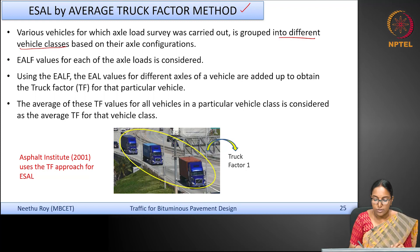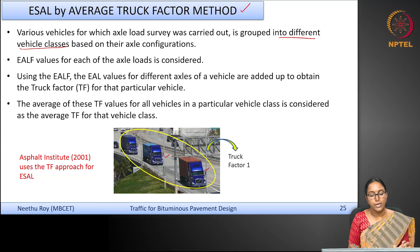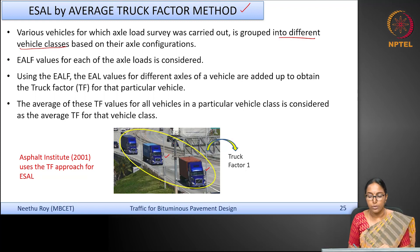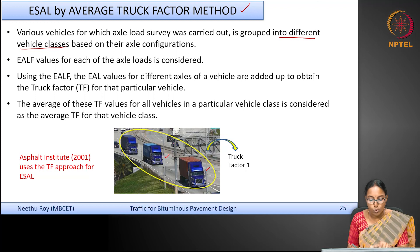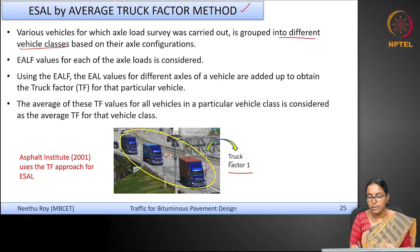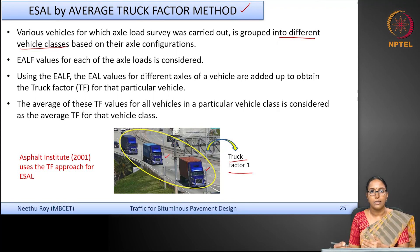You have a truck factor for this vehicle, a truck factor for that vehicle, and so on. You can then average out the truck factor for all the vehicles in that particular vehicle class to get an average truck factor for that vehicle class. If all blue trucks belong to one vehicle class, you get a truck factor for that class. Similarly, another vehicle class will have a separate truck factor.